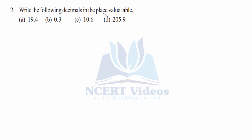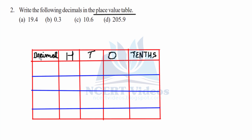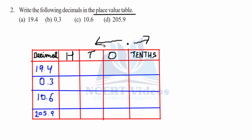Question 2: Write the following decimals in the place value table. We have to represent all of them in the given table. We'll make a place value table depicting various places — ones, tens, hundreds — followed by tenths after the decimal point. We will start writing: for tens that is four, then we have nine in the ones position and one in the tens position.